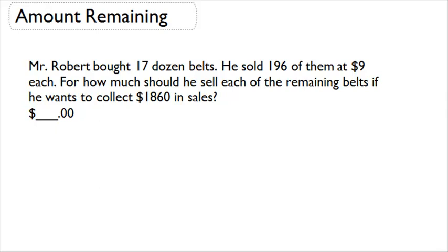Here we need to know a couple things. First, we want to know how many total belts he had to begin with. He had 17 dozen belts. So we have 17 times 12 belts in a dozen equals 204 belts.